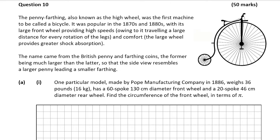We're told that the penny farthing was the first machine to be called a bicycle and was popular in the late 1800s. It has one small wheel at the back and one larger wheel at the front. Part one, worth five marks, tells us that one particular model made in 1886 weighs 36 pounds, has a 60-spoke 103-centimeter diameter front wheel, and a 20-spoke 46-centimeter diameter rear wheel.